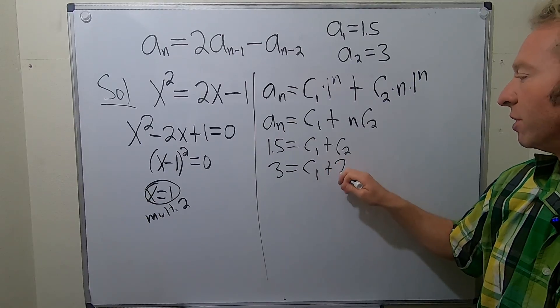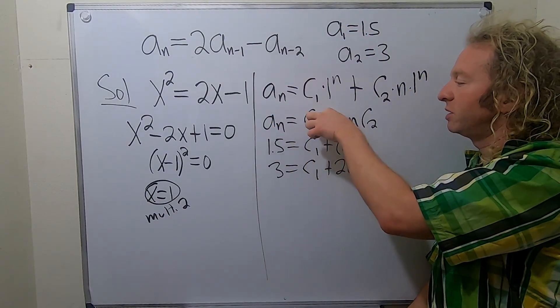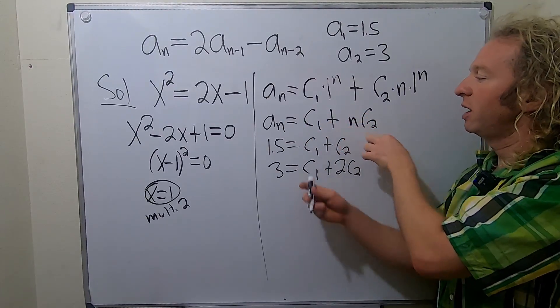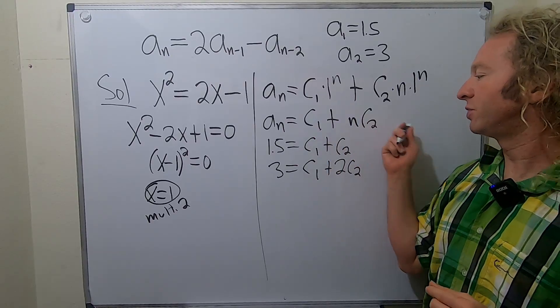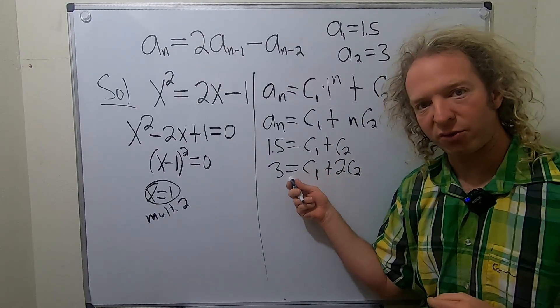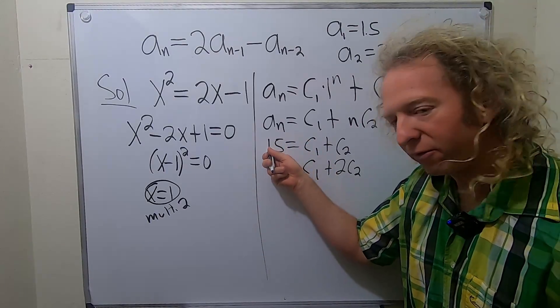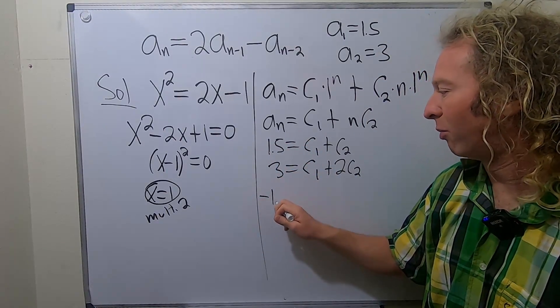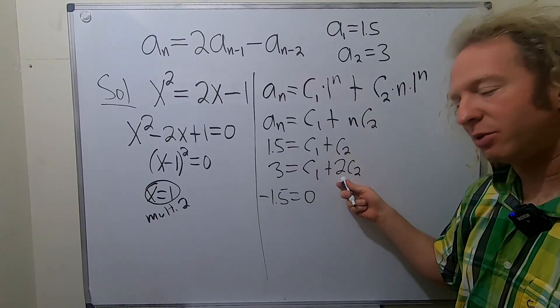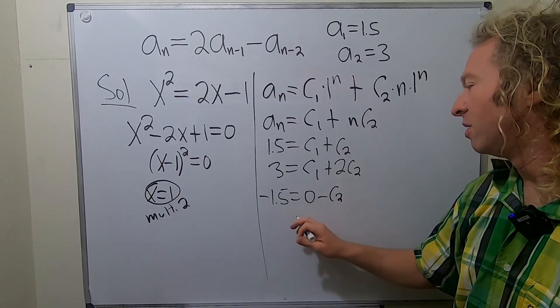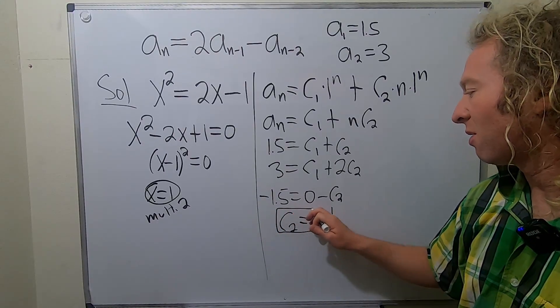a_2 equals 3. So I'll put the 3 here. And our n is 2 in this case. So it'll be c1 plus 2c2. So c1 plus 2c2. Very, very pretty stuff, right? So again, when n is 1, we get c1 plus c2 because n is 1. And we set it equal to 1.5. When n is 2, we get c1 plus 2c2, and we set it equal to 3. Now we can simply subtract.